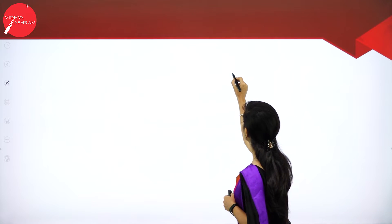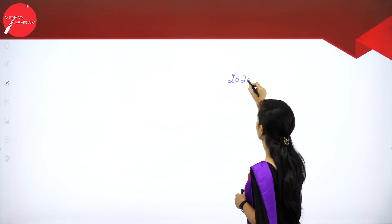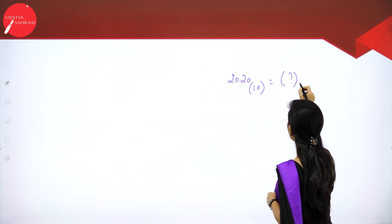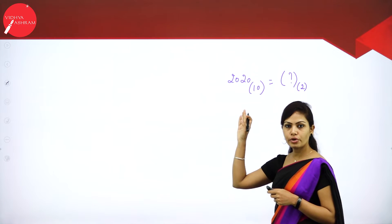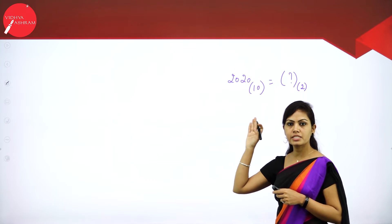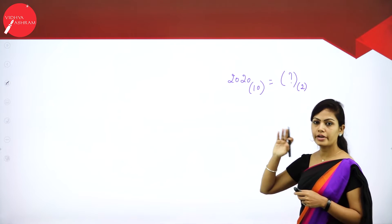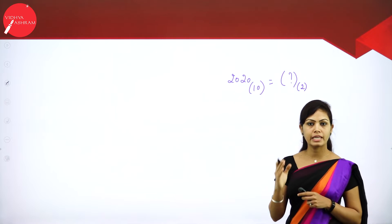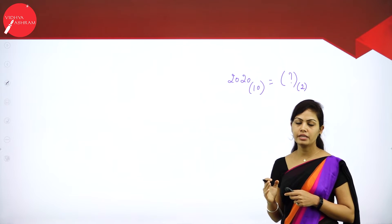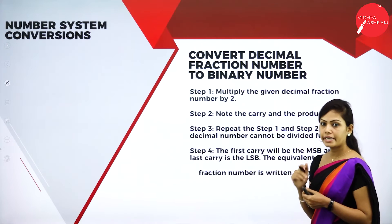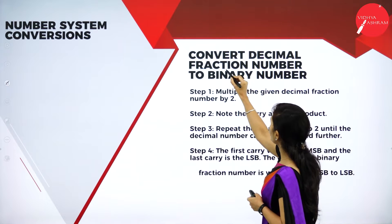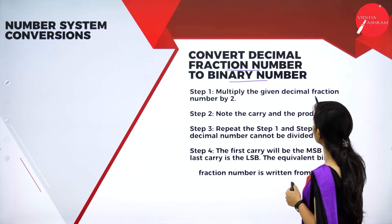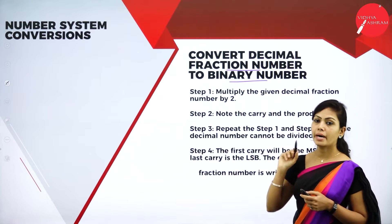Assignment question: 2020 (base 10) — find the base 2 value. First divide this decimal value by 2 and record all the remainder values from MSB to LSB to write the binary value.